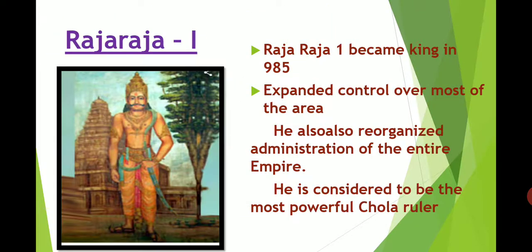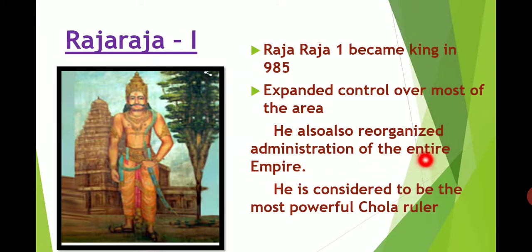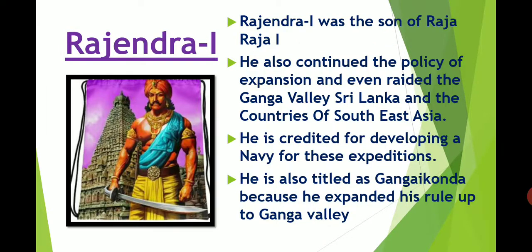Raja Raja I became king in 985. He expanded control over most of the area and also reorganized the administration of the entire empire. He is considered to be the most powerful Chola ruler.